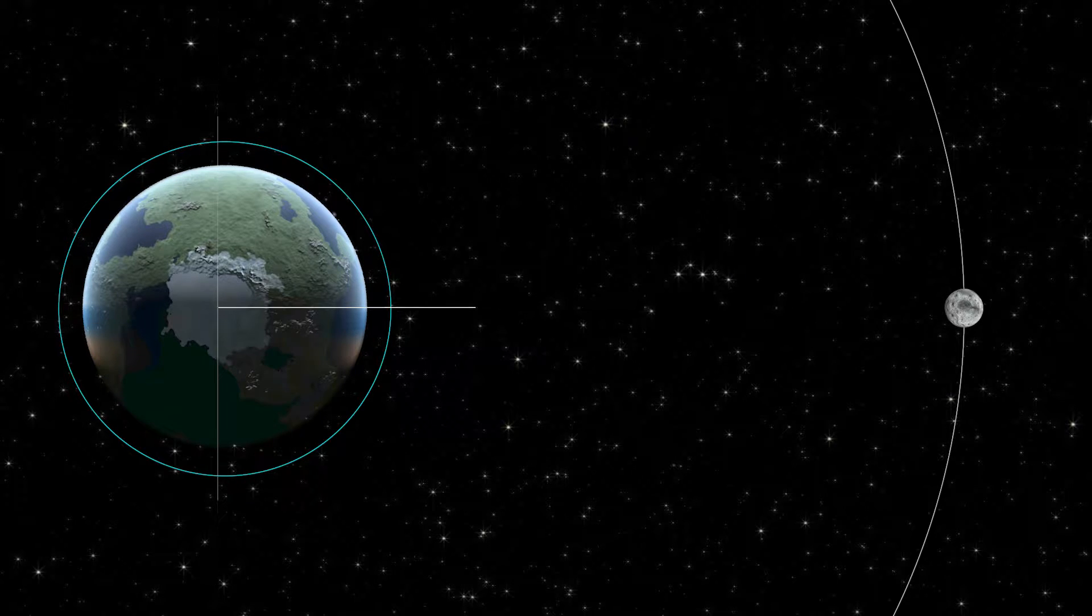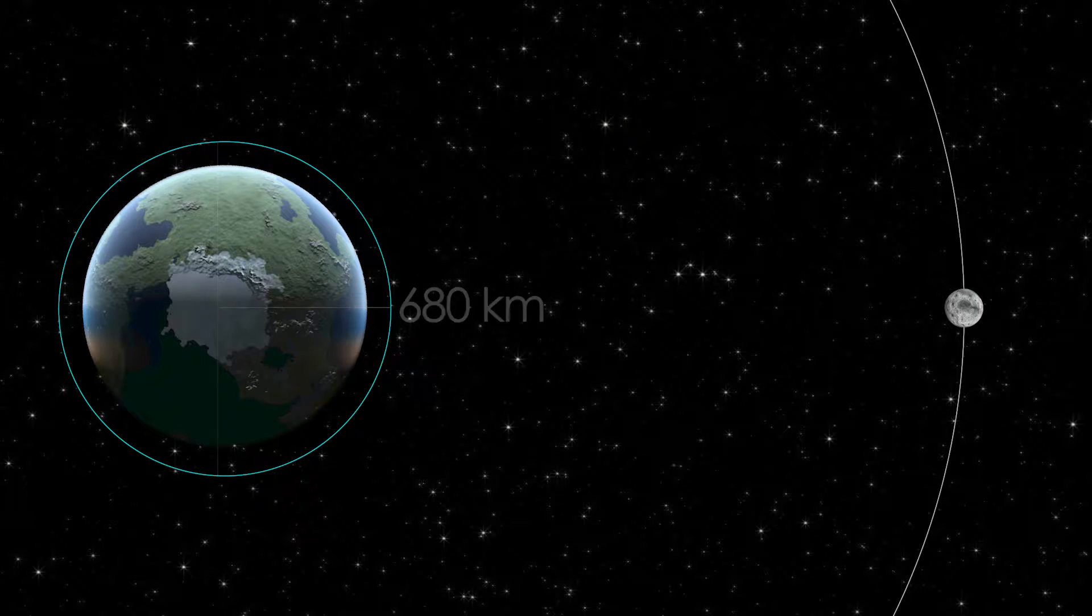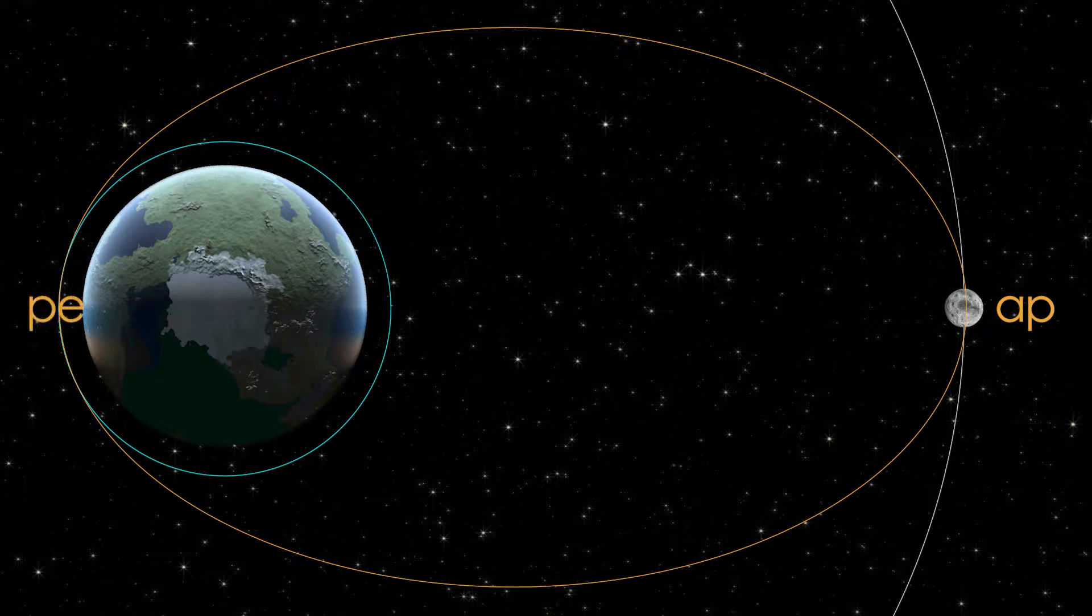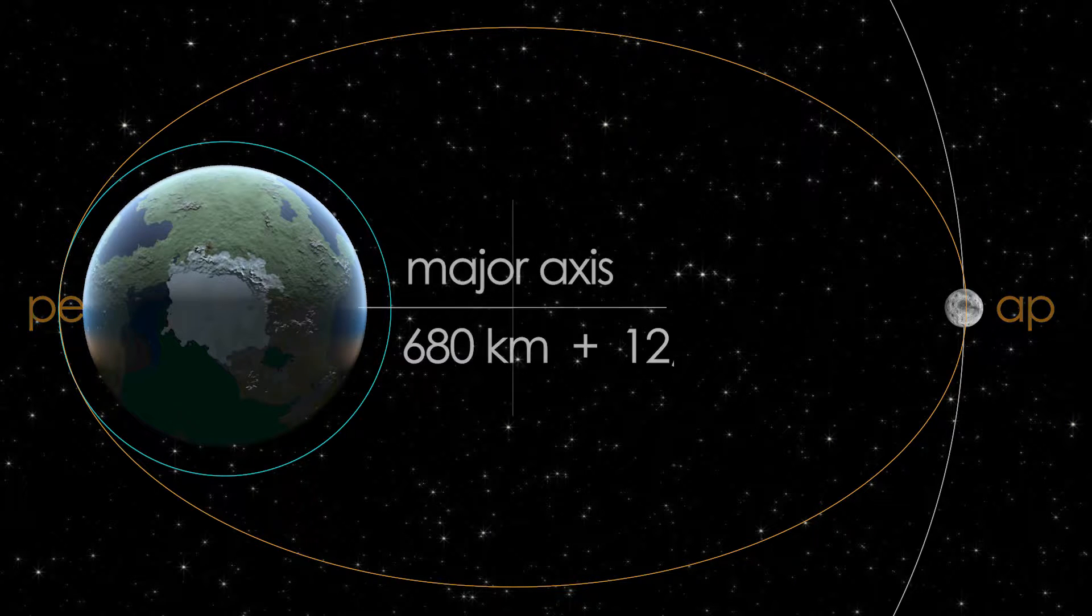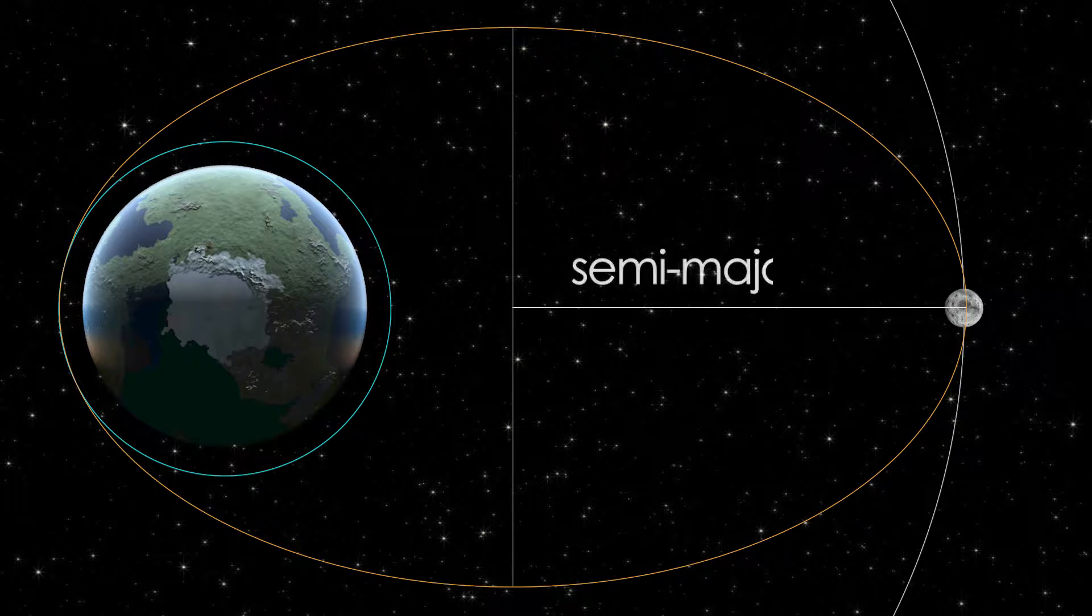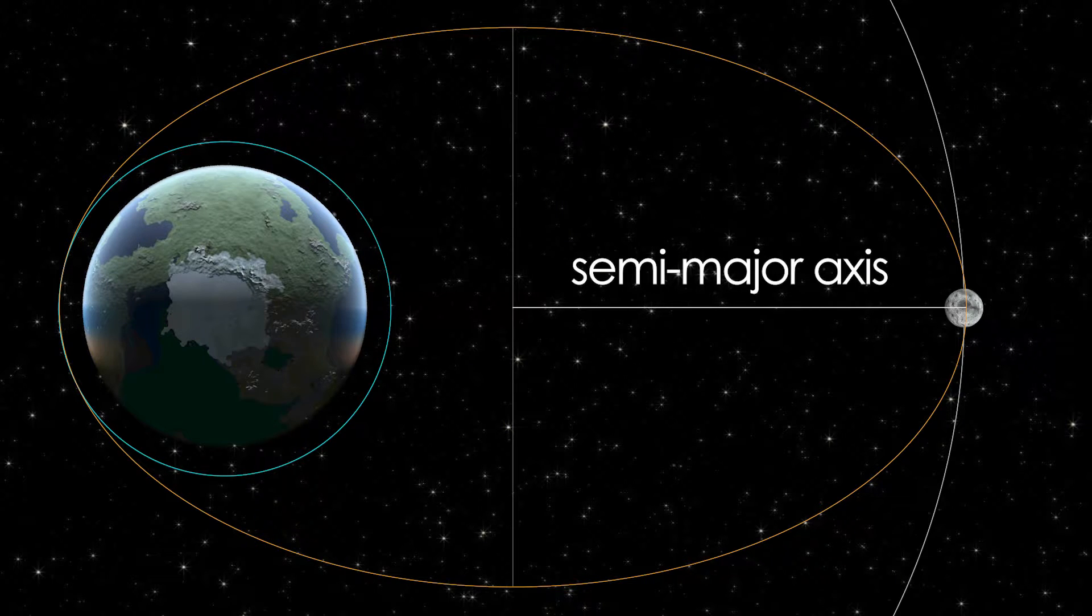We also need our initial radius, which is our altitude plus the radius of Kerbin. Again, looking at the wiki, we see that Kerbin has a radius of about 600 kilometers, bringing our initial radius to 680 kilometers. Now we need to know the maximum and minimum heights, also called apoapsis and periapsis, for our transfer orbit. If we add these together, we get the major axis, divide by 2, and we get the semi-major axis, and that comes out to about 6,340 kilometers.